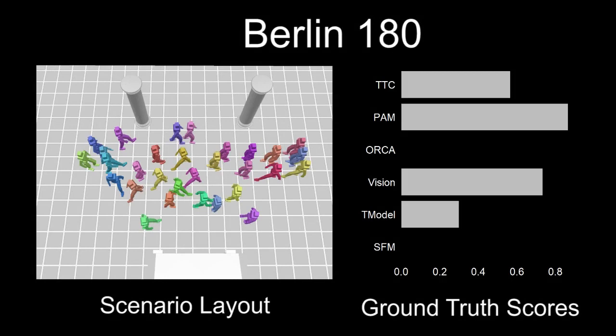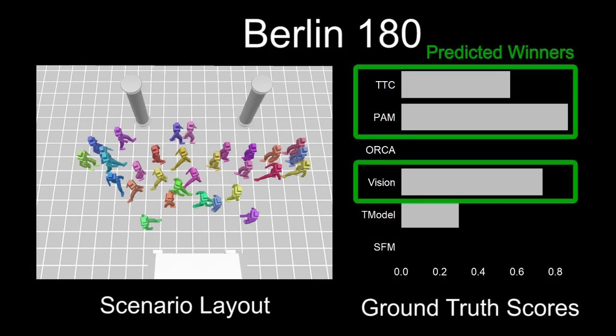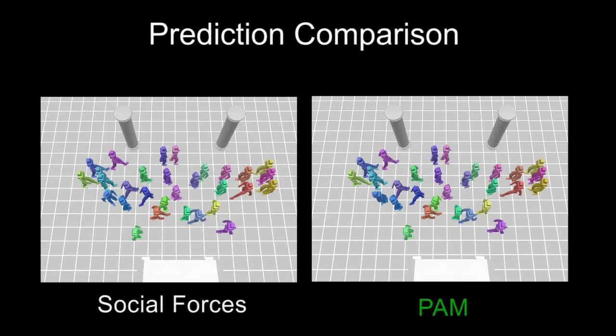Here we create a crowd scenario designed to match a known scenario with ground truth. In this scenario, TTC Forces, PAM, and Vision all have the lowest simulation error, and all three are predicted as winners.